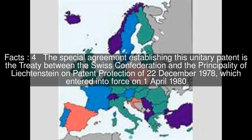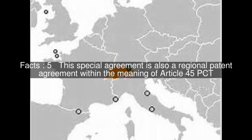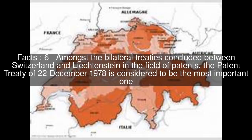The special agreement establishing this unitary patent is the treaty between the Swiss Confederation and the Principality of Liechtenstein on Patent Protection of December 22, 1978, which entered into force on April 1, 1980. This special agreement is also a regional patent agreement within the meaning of Article 45 PCT. Amongst the bilateral treaties concluded between Switzerland and Liechtenstein in the field of patents, the Patent Treaty of December 22, 1978 is considered to be the most important one.